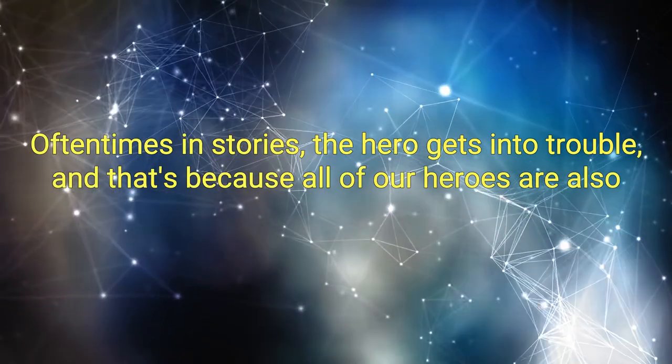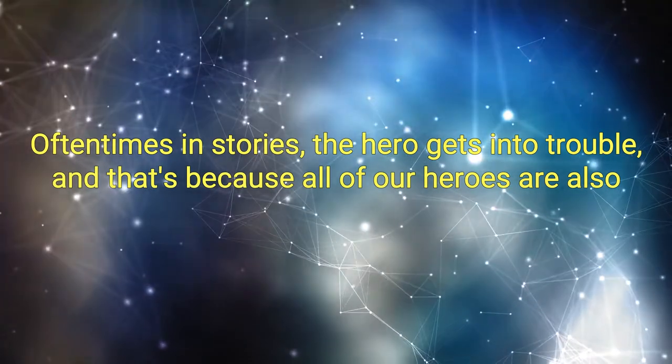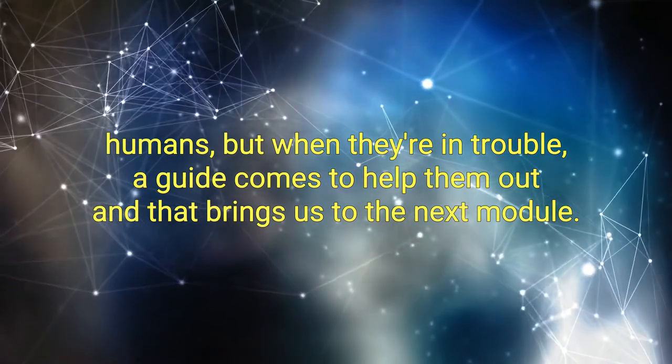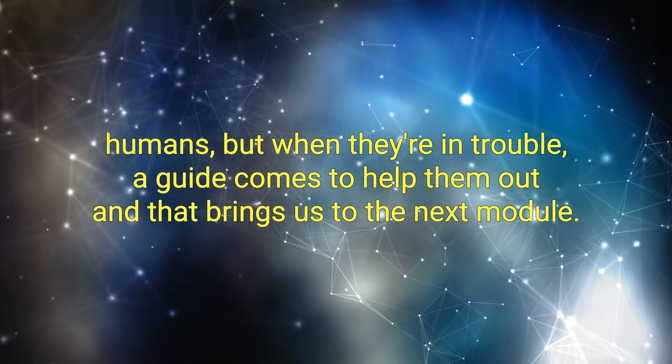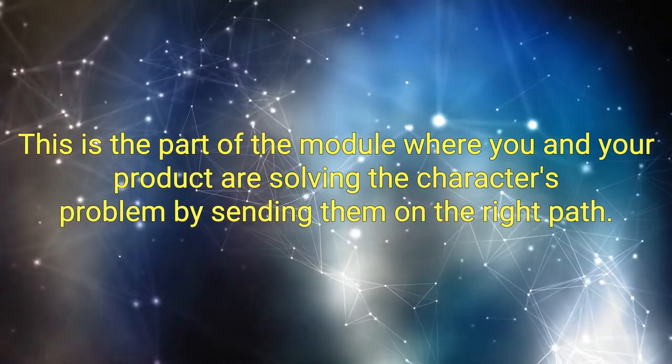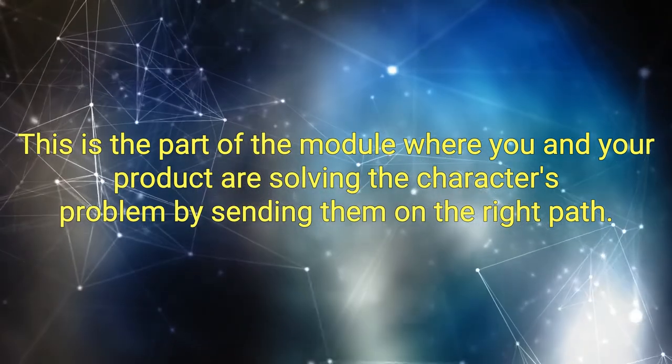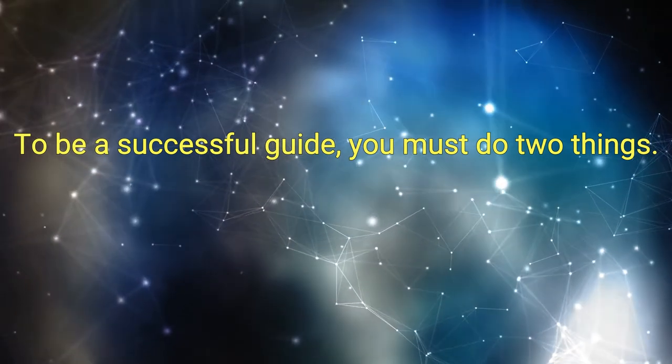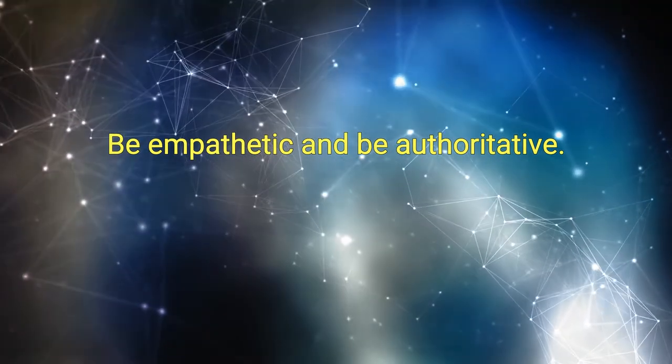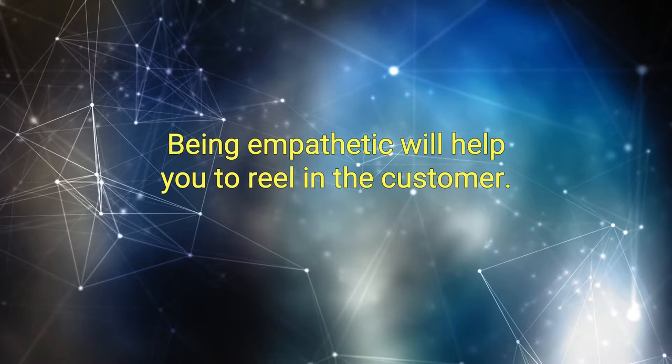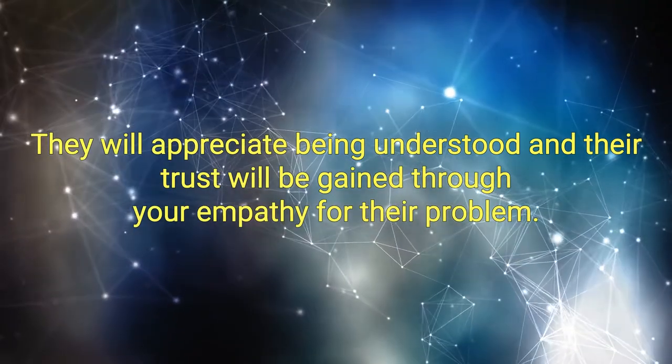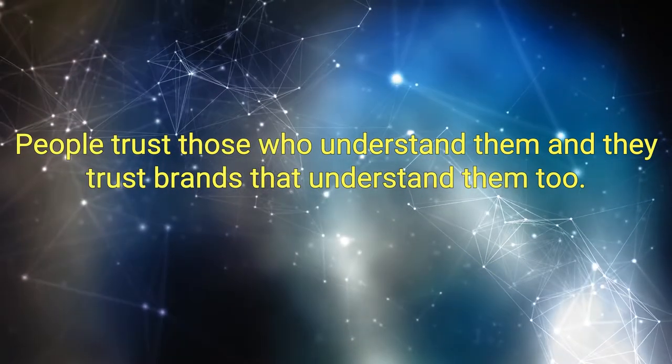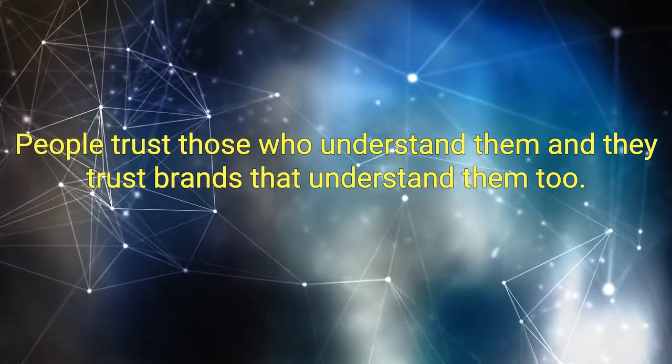Be empathetic and authoritative. Oftentimes in stories, the hero gets into trouble. And that's because all of our heroes are also humans. But when they're in trouble, a guide comes to help them out. And that brings us to the next module. This is the part of the module where you and your product are solving the character's problem by sending them on the right path. To be a successful guide, you must do two things: Be empathetic and be authoritative. Being empathetic will help you to reel in the customer. They will appreciate being understood and their trust will be gained through your empathy for their problem. People trust those who understand them, and they trust brands that understand them too.